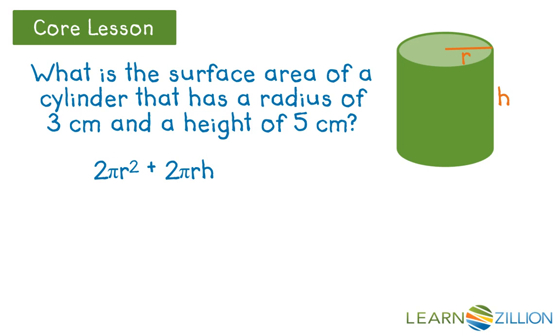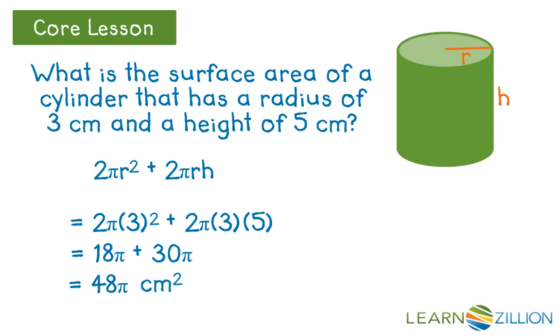To evaluate the expression, we'll substitute 3 for r and 5 for h. And then we'll use order of operations to simplify. So we can say that the surface area of the cylinder is 48 pi square centimeters.